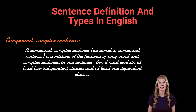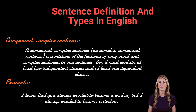A compound-complex sentence is a mixture of the features of compound and complex sentences in one sentence. So, it must contain at least two independent clauses and at least one dependent clause. Example: 'I know that you always wanted to become a writer, but I always wanted to become a doctor.' Here, one dependent clause is followed by a complex connector and two independent clauses with a compound conjunction between them.